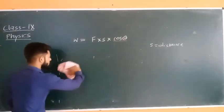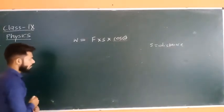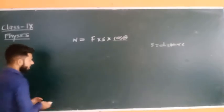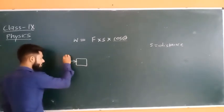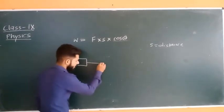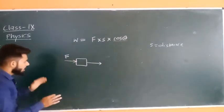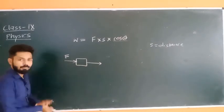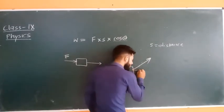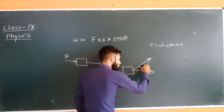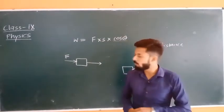Now let's understand theta carefully. Suppose there is an object, you apply force F in one direction, and the object moves in another direction. Theta is the angle between the direction in which the force is applied and the direction in which the object is moving. Always remember: theta is the angle between the force applied and the direction of movement of the body.